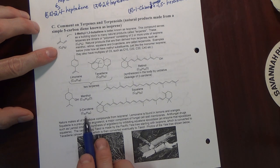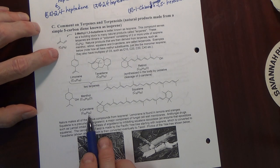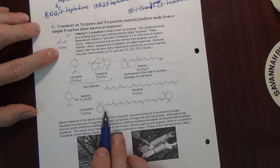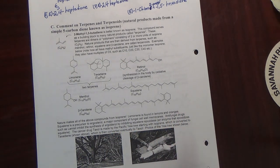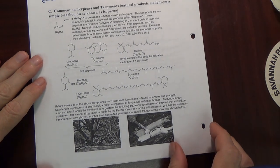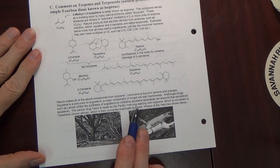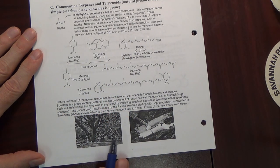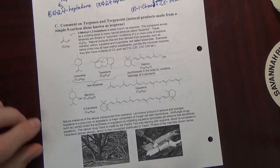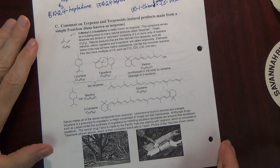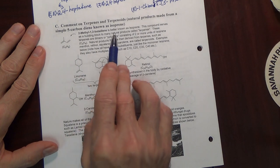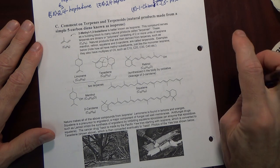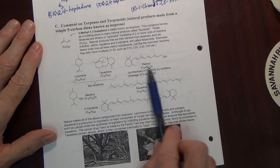The anti-cancer drug taxol and many other natural products ultimately come from isoprene. So this is another class of natural products. You remember during test one we saw a class called alkaloids - those were natural products that contained a basic nitrogen. These terpene compounds do not contain a basic nitrogen.